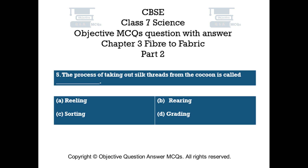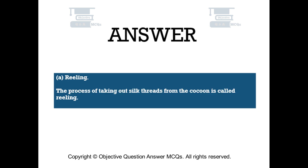Question number 5. The process of taking out silk threads from the cocoon is called — Option A: Reeling. Option B: Rearing. Option C: Sorting. Option D: Grading. The right answer is Option A — Reeling. The process of taking out silk threads from the cocoon is called reeling.